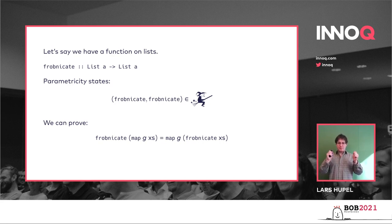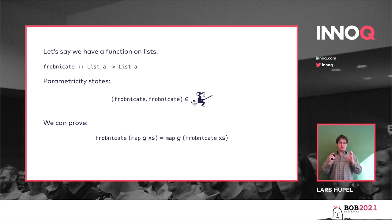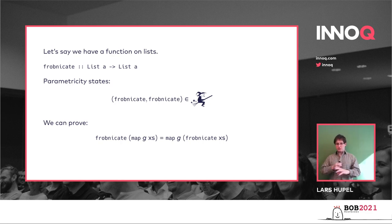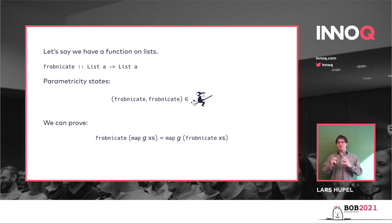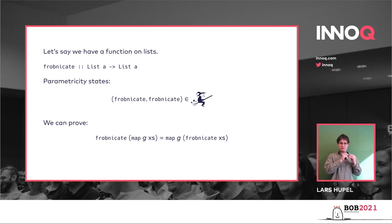That's really interesting — it's not exactly obvious. The reason we can prove this is because frobnicate does not know anything about the structure of the arguments it receives. It can reshuffle arguments, drop them, reverse them, but it cannot look at the actual values themselves. List of A could be a list of strings, ints, functions, or whatever — and in particular frobnicate cannot invent new values of A, because it doesn't know what A is. Because of that fact, we can prove that you can either first frobnicate and then map, or first map and then frobnicate. This is a consequence of the parametricity theorem, and the last line on this slide is what Wadler's paper is about.